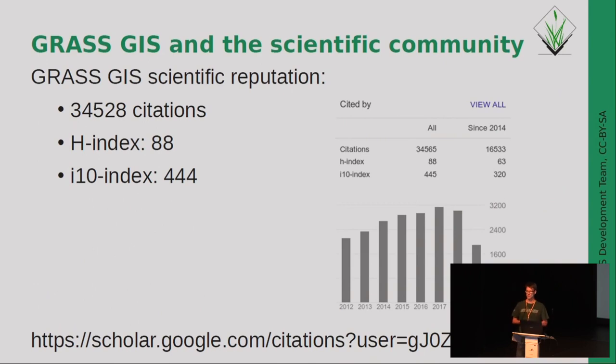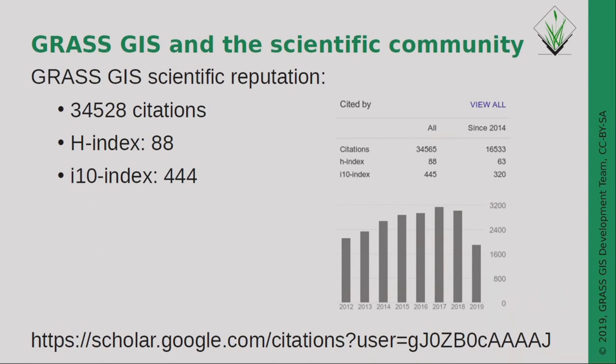Much of the background of GRASS comes from science. It is not a science-only project — it's also used in companies — but there's this scientific reputation. We got the idea to have an auto-generated profile of the GRASS Development Team in Google Scholar. At the time, it shows 34,000 citations. We did not manually find them — you can automate this with keyword selection. It shows plenty of citations but also original material being published, keeping methods peer-reviewed.